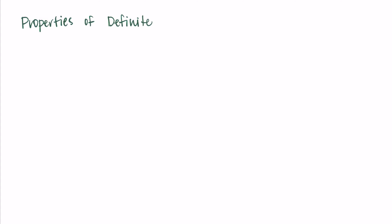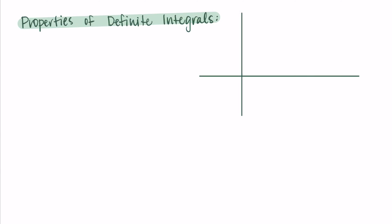Welcome back. In this video we are going to talk about some properties of definite integrals. These are just ways you can manipulate a definite integral to help you solve a problem, depending on what information you know or maybe just how the problem is set up. If I draw a graph here, let's say it's just some shape, and we have a portion above the horizontal axis from a to b, and then below the horizontal axis from b to c. This is just what I'm going to use as my sample to give us a visual for the properties we're talking about.